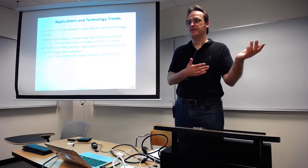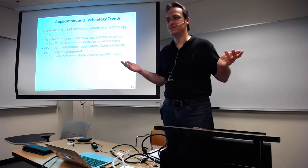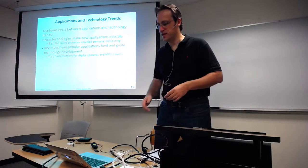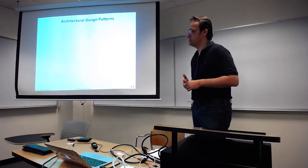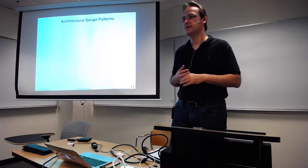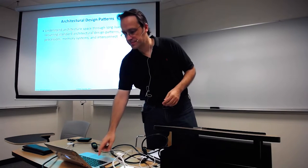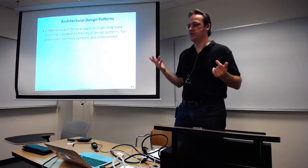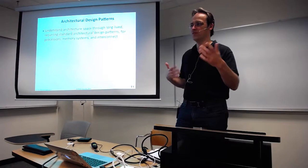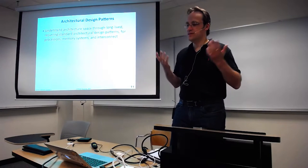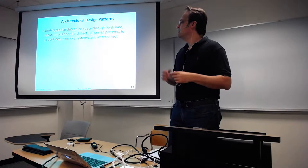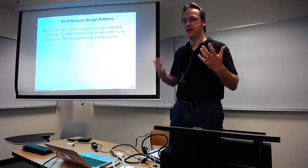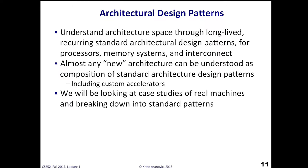The flip side is: if nobody cares about the application you developed the technology for, you don't get funding to push that technology further. So architectural design patterns — we'll talk through the standard ways people build computers. Over time it's distilled down into certain classes of machine. If you understand how people do this for processors, interconnect, and memory systems, you can understand any random machine — you can break it down into standard patterns and identify strengths and weaknesses. In this class we won't dive all the way down to RTL-level design like in CS250, but we'll look at some real machines and think about how they break down into standard architectural patterns.